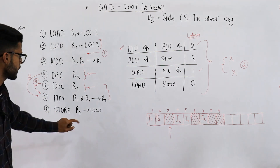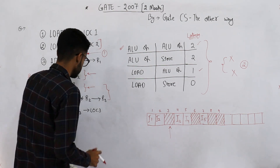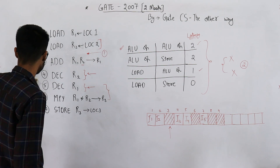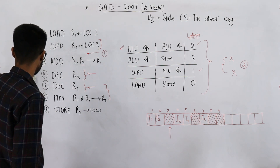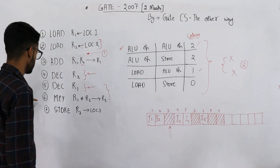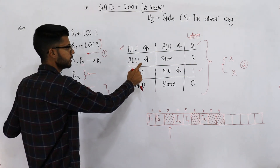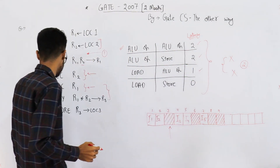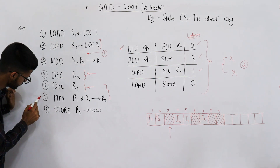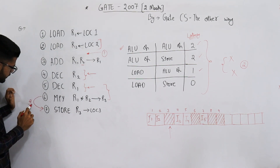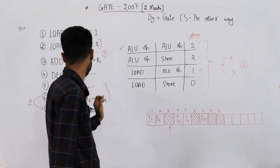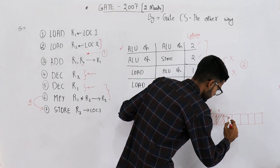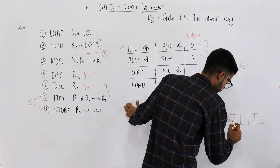The seventh instruction is store R3. R3 is produced by instruction six and used by instruction seven. An ALU-to-store dependency requires a latency of two clock cycles between instructions six and seven. So after executing instruction six, there must be a latency of two units before we execute instruction seven.